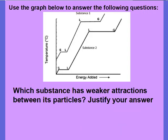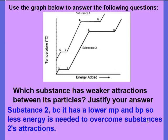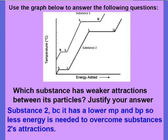Go ahead and pause the video and try this one on your own. Restart when you have your answer. So, our weaker attractions must have been Substance 2, because Substance 2 has a lower melting point and it has a lower boiling point. So, less energy was needed to overcome those Substance 2's attractions.